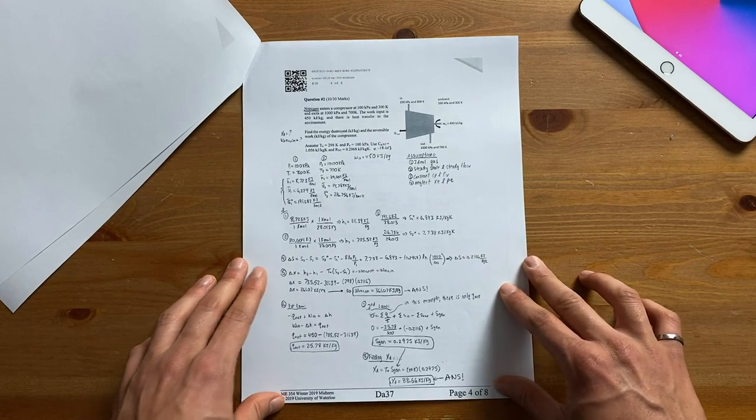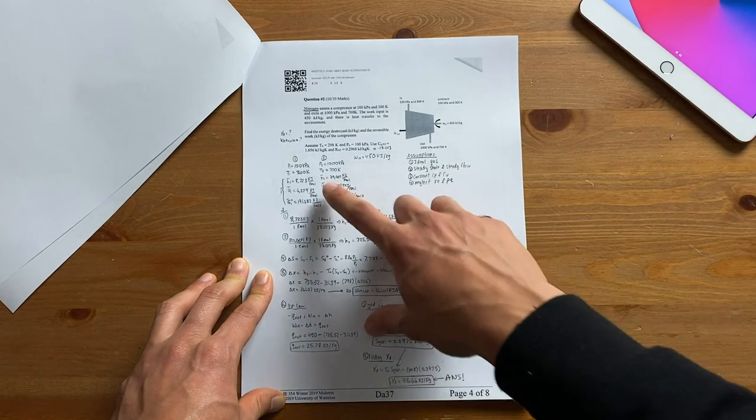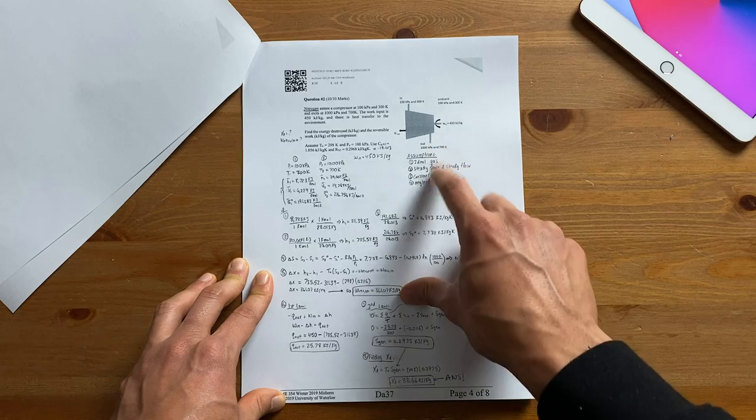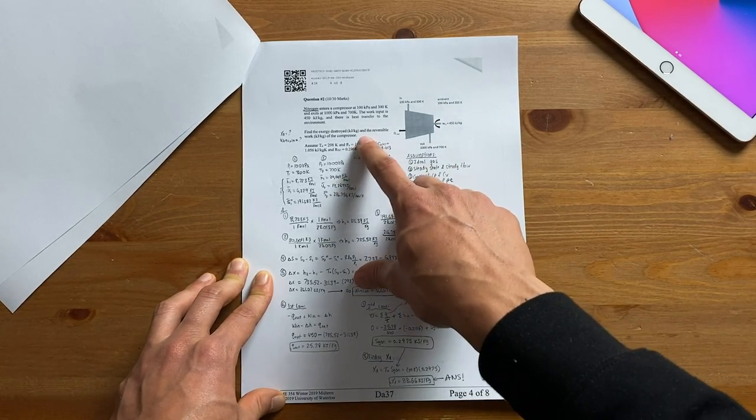Let's move on to question 2. It's sort of similar to question 1 in the way that I solve it and show my work. As you can see I really like numbering my steps describing briefly what I'm doing and stating all my assumptions. For this particular question we're told that we have nitrogen in a compressor and we need to find the work and the exergy destroyed.